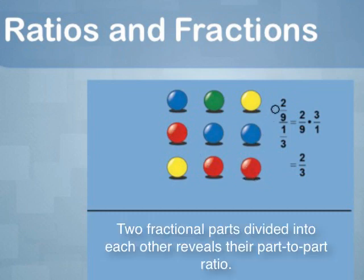So two fractions divided into each other shows the ratio of two items as a part-to-part ratio. With some ratios, we can find the fractional amounts they represent. Let's look at an example.